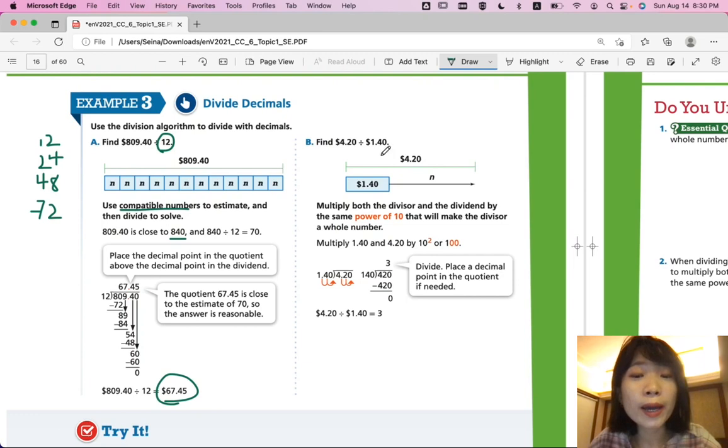So, your exact answer should be 67.45. In the same way, you can solve part B, 4.2 divided by 1.4. Like that. But, when you're dividing with a decimal number, it's not a whole number, right? Then you have to make it a whole number. Remember, you can move two decimal places away to get 140 and 420. Or, you can just move one decimal place over and get 42 divided by 14. They're the same thing. They're going to get the same answer.